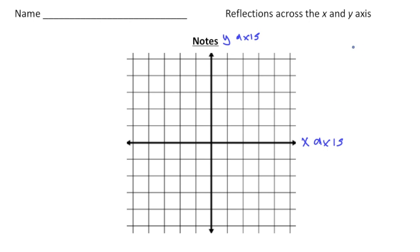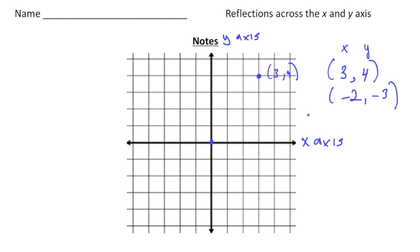Now we're going to need to plot some points today. So let's say we have point (3, 4) — just a reminder that the 3 is the x-value and the 4 is the y-value. Where the two lines meet is called the origin, which is location (0, 0). To graph point (3, 4), we start at the origin, go right three, then up four. To plot the point (-2, -3), we start at the origin, go left two — that's negative — then down three.